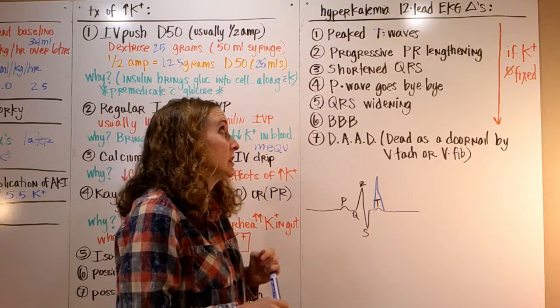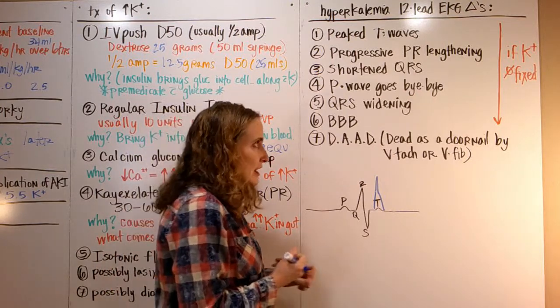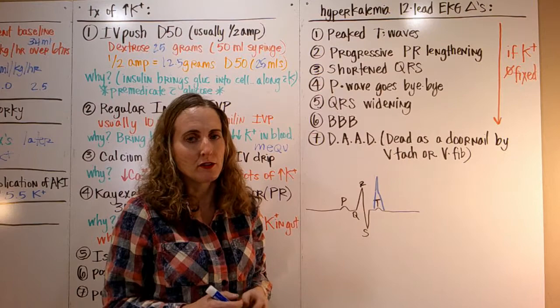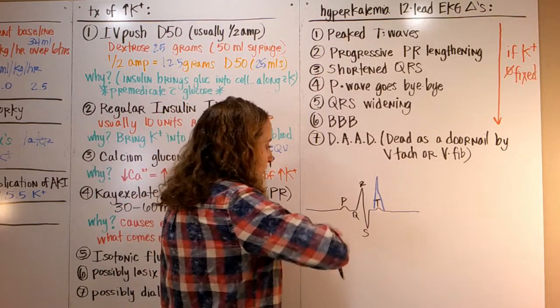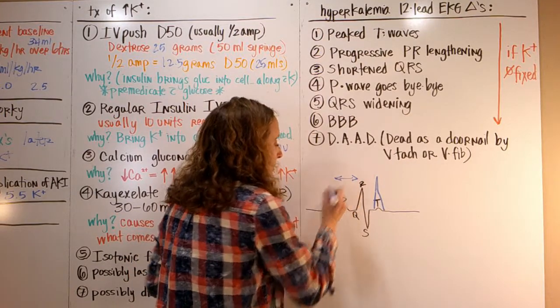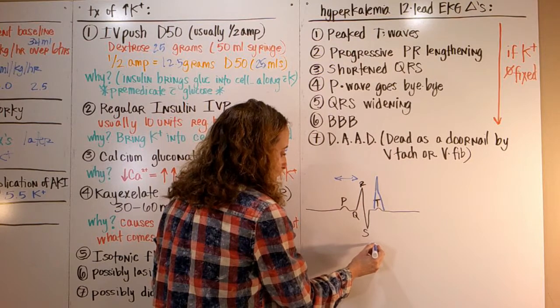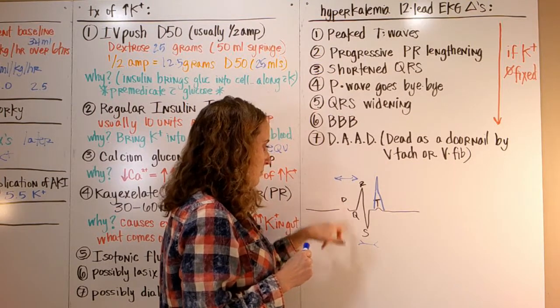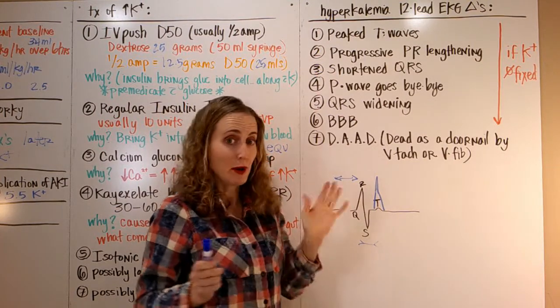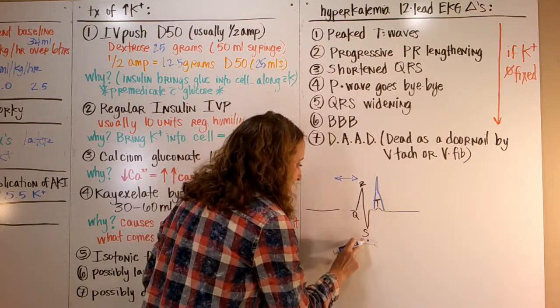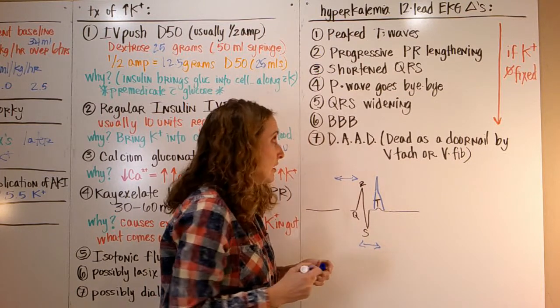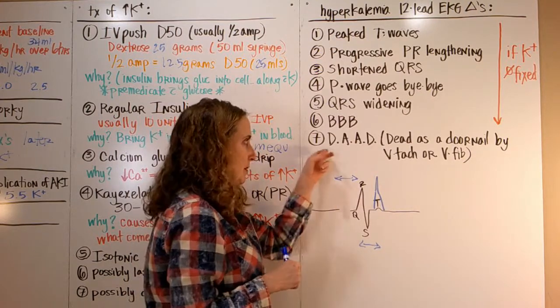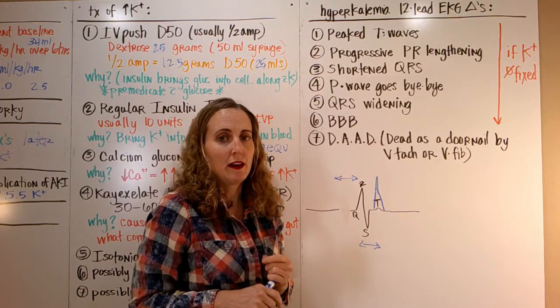You're going to see progressive PR lengthening—this is when our potassium, these things happen as the potassium is getting higher and higher and if it goes unchanged or unfixed. Our PR interval is going to get longer, and then the QRS shortens up. Then the P wave disappears—bye bye P wave, no more P wave. And then the QRS widens. Eventually we get a bundle branch block.